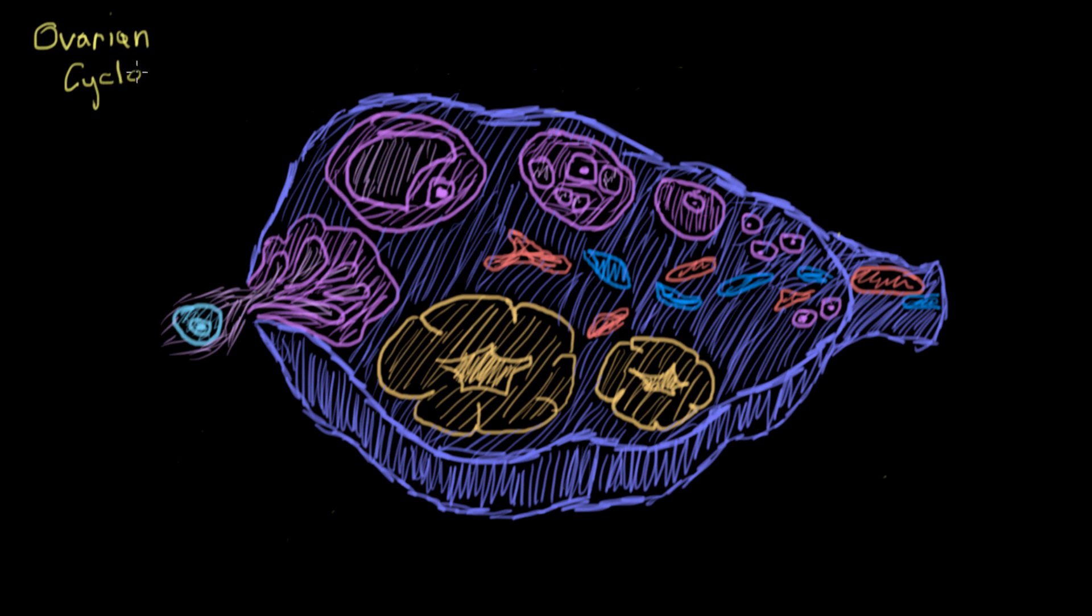We're going to talk about the ovarian cycle. The ovaries are two structures in a female's reproductive system that produce her eggs. Each month, her eggs go through a maturation process called the ovarian cycle. That cycle creates a secondary oocyte that can be fertilized by a sperm to result in a pregnancy.